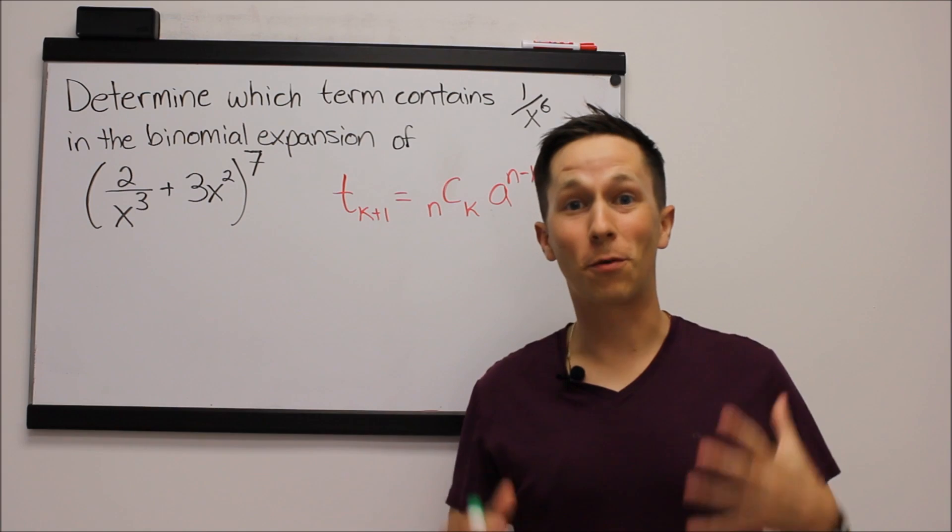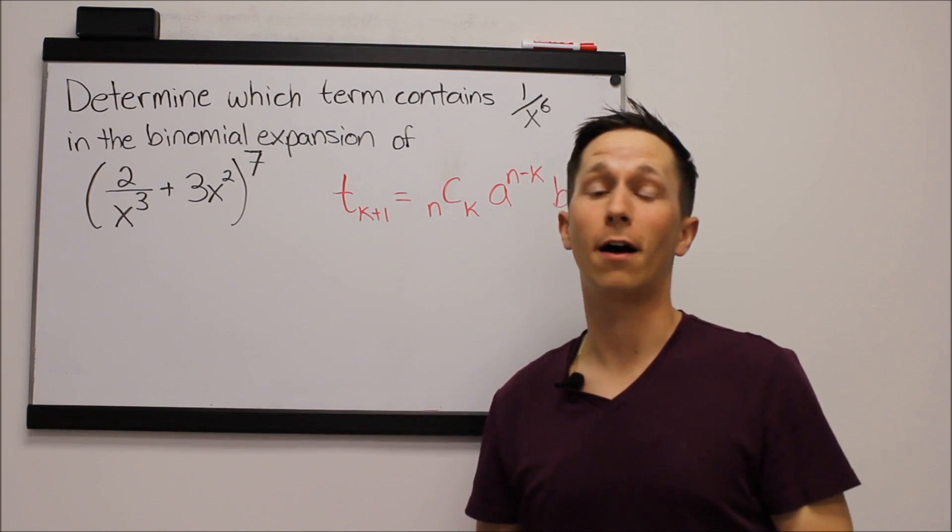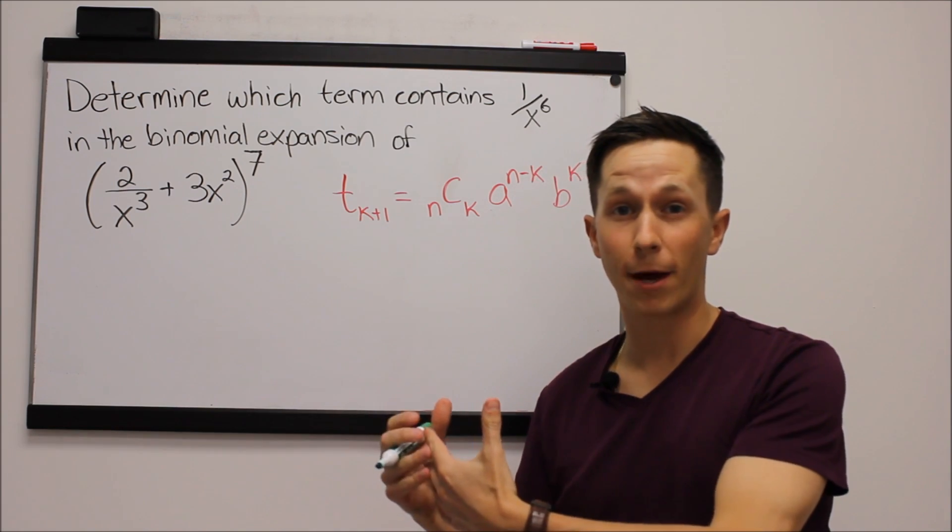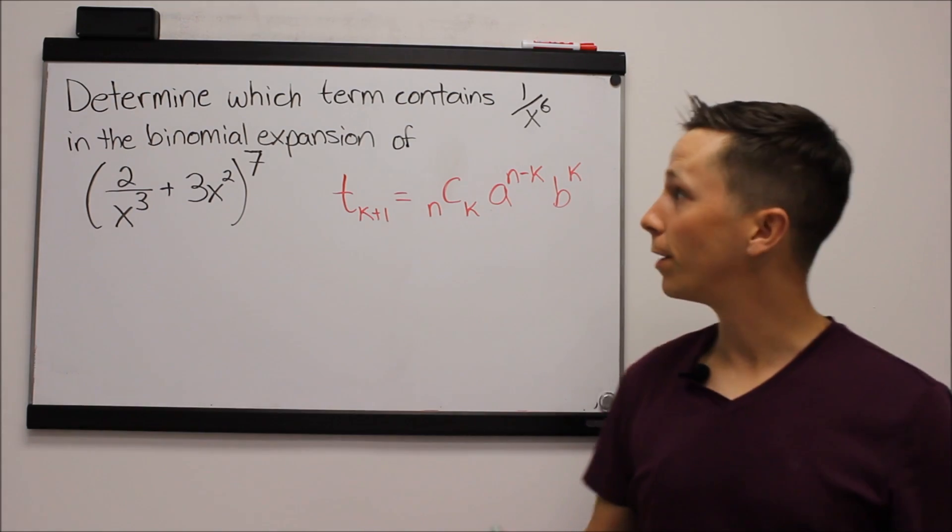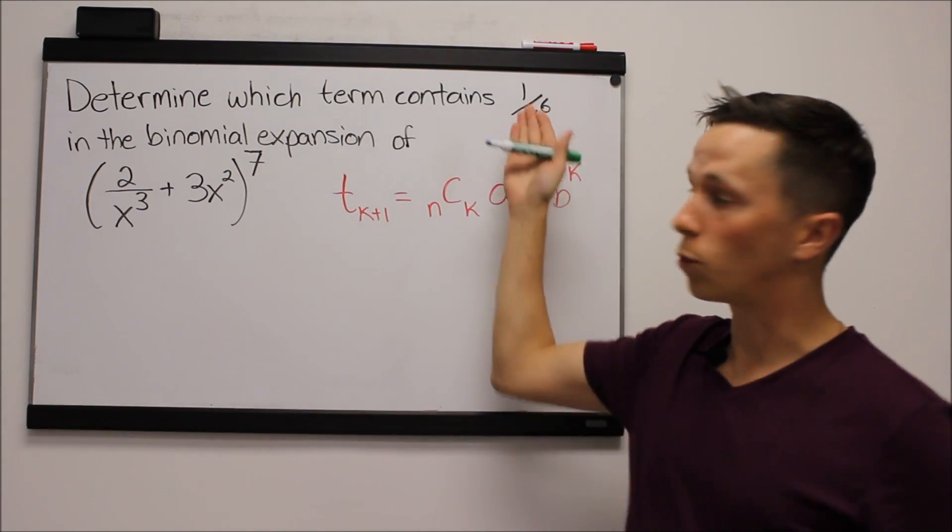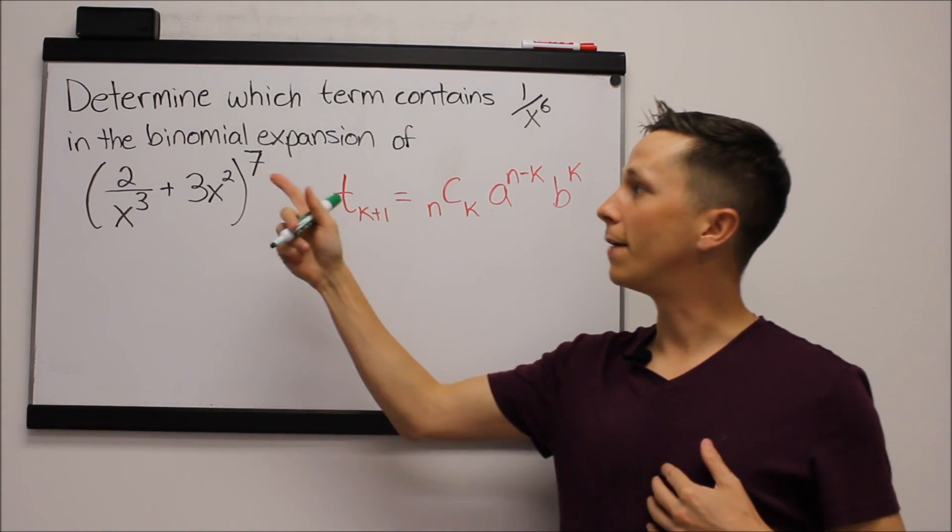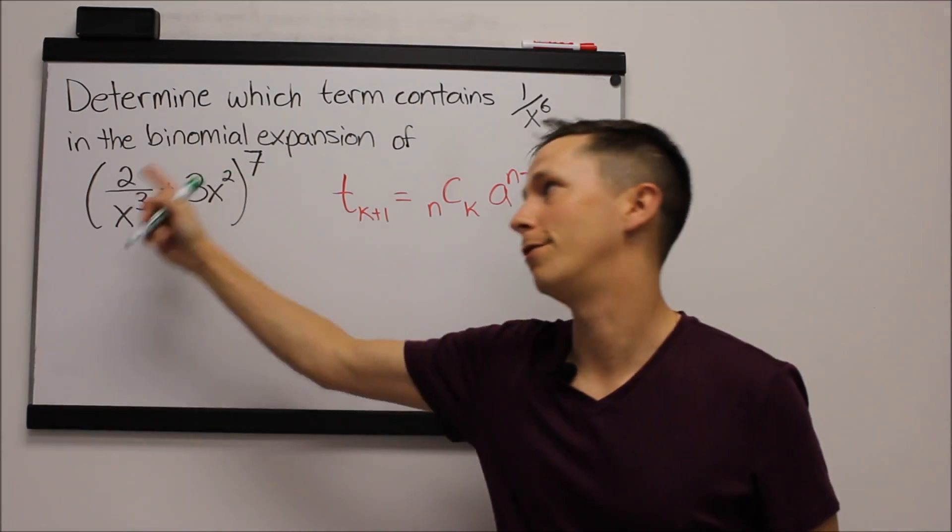Hey guys, it's Mike from Arnold Tutoring with a really good Grade 12 pre-cal past provincial exam in Manitoba question. Let's quickly read it. Determine which term contains 1 over x to the 6 in the binomial expansion of this mess.